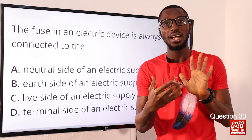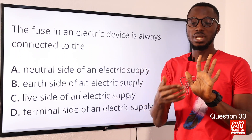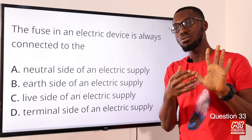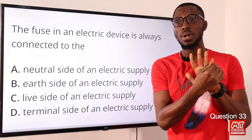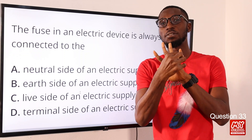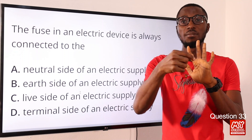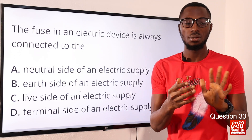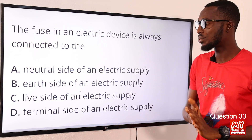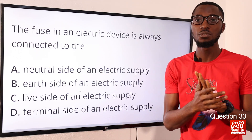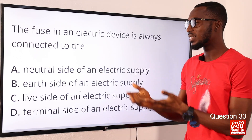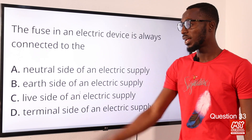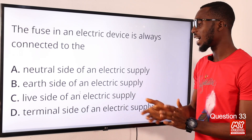In a three-pin plug, the blue wire is the neutral and connects to the left; the brown wire is the live and connects to the right — this is also where the fuse is found. It is a short length of wire with a very low melting point. The striped wire connects to the top (earth). So the fuse is always connected to the live wire. The correct option is option C.